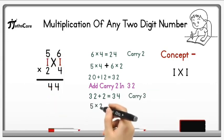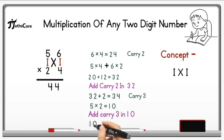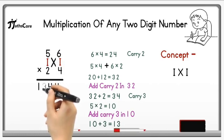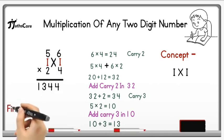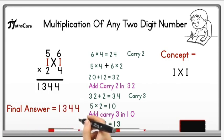After that we have to do multiplication of tens place digit. So 5 × 2 is equal to 10, and add this carry 3 in 10. 10 plus 3 is equal to 13. Write down this 13 before 44, and in this way you got the final answer 1344 within one step.